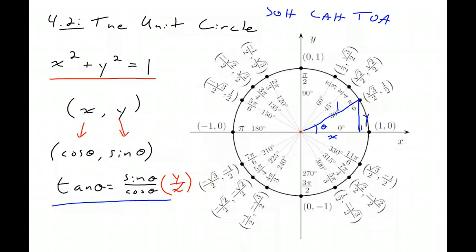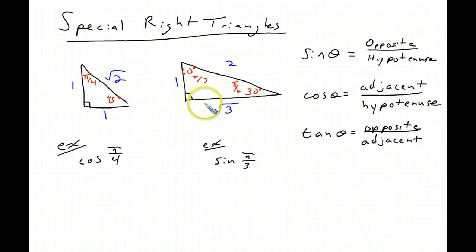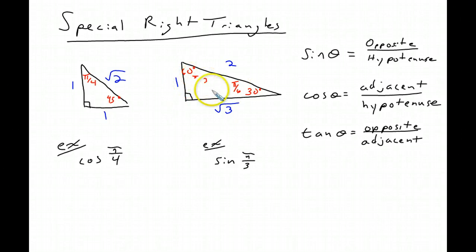I'm going to teach you a few tools using special right triangles and quadrant labeling to get unit circle values correctly every time. The first tools to memorize are special right triangles from geometry. The 45-45-90 triangle — 45 degrees is π/4 — has ratio 1, 1, √2. The 30-60-90 triangle has π/6 equal to 30 degrees and π/3 equal to 60 degrees. Across from the 30° is 1, across from the 60° is √3, and the hypotenuse is 2.